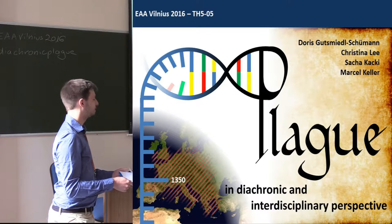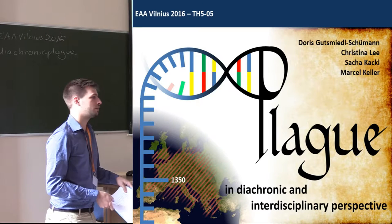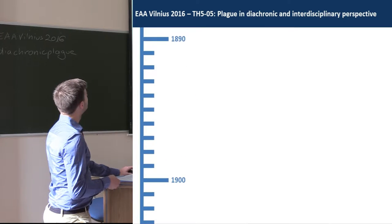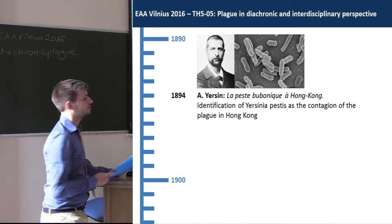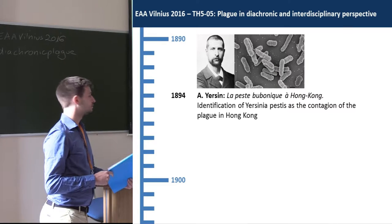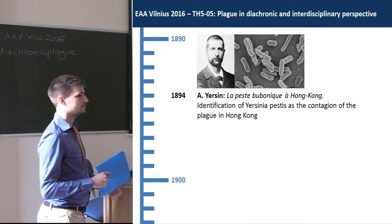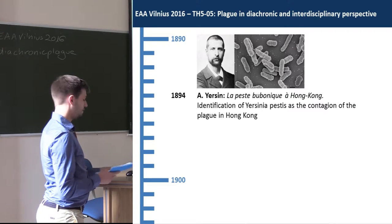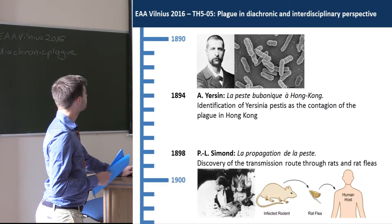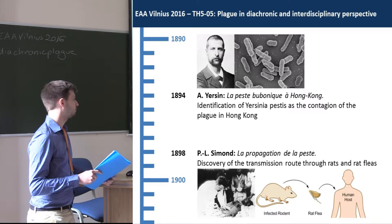In this first introduction, I would like to briefly sketch the history of plague research over the last 100 years. We start at the end of the 19th century with Alexandre Yersin, who during the third pandemic at the Hong Kong plague discovered the bacterium Yersinia pestis as the causative agent of plague, thereby launching all biological research on plague. Some years later, Simon discovered the transmission route via the black rat and the rat flea.